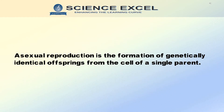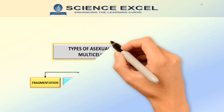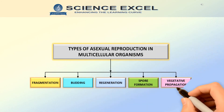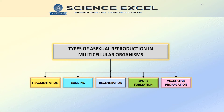The previous tutorial dealt with asexual reproduction in unicellular organisms. Now let's explore the different types of asexual reproduction in multicellular organisms. There are five types: fragmentation, budding, regeneration, spore formation, and vegetative propagation. Now let's understand each type in detail.